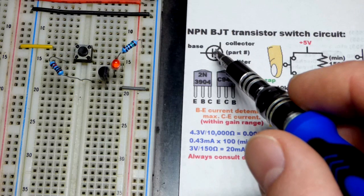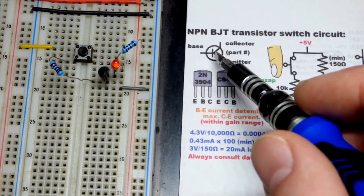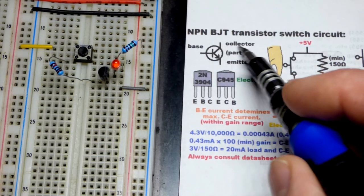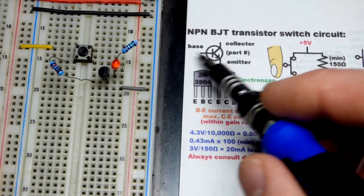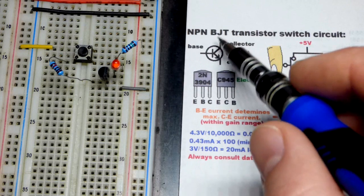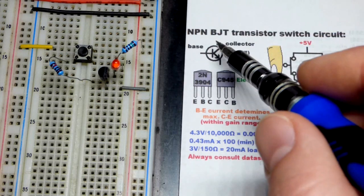Here's the schematic symbol. NPN the arrow points out. PNP the arrow points in. We got that collector on top there, base in the middle. That's the signal that controls it. The collector, the load is on the collector side.